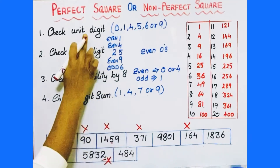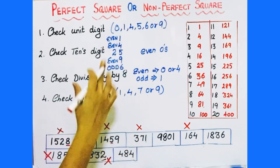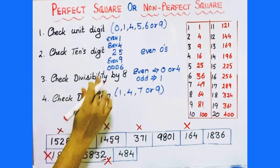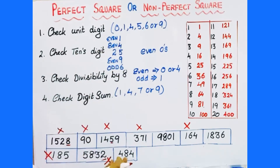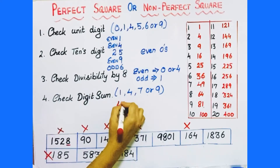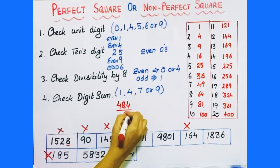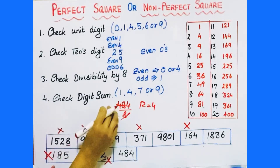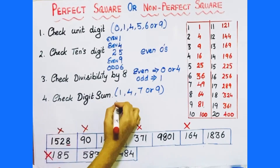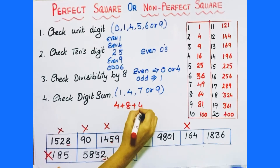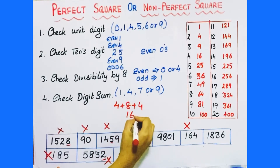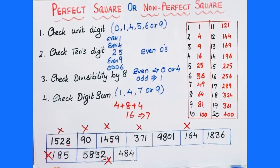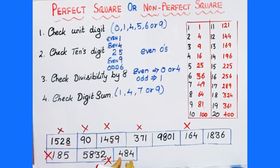Next number is 484. First test: unit digit is 4 — passed. Next test: tens digit should be an even number — yes, even number — passed. Next: divisibility by 8 — divide 484 by 8, remainder is 4 — passed. Next test: digit sum — 4 plus 8 plus 4 equals 16, then 1 plus 6 equals 7. Digit sum is 7 — passed. So 484 passes all four tests and might be a perfect square number.